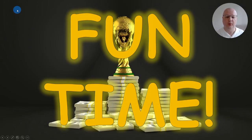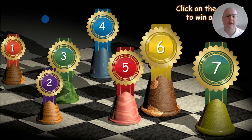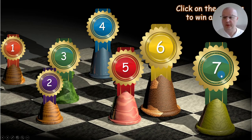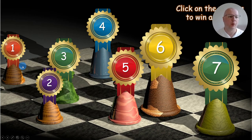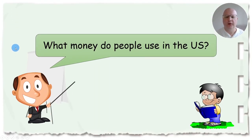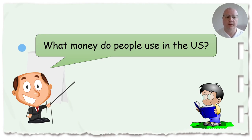We finish this lesson with a fun game which I call Fun Time. It's a very simple game but students are going to love it. They need to click on a number and progress from one to seven. They don't get any points — they just win a prize, and the prizes get better with each number. There are seven questions and this activity recaps the whole lesson, so all the questions are based on what you've just taught. Question number one: 'What money do people use in the US?'